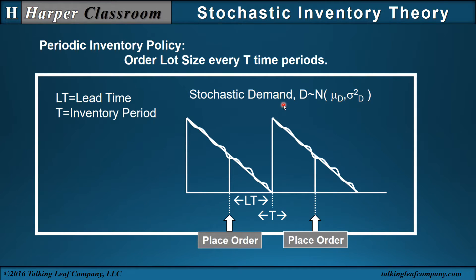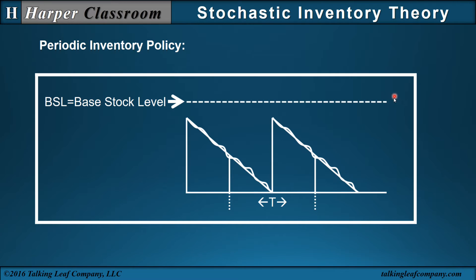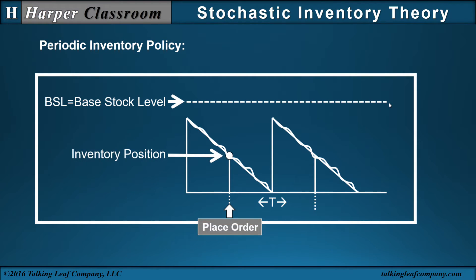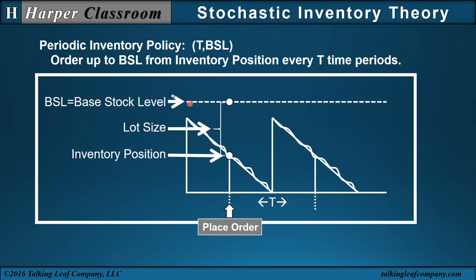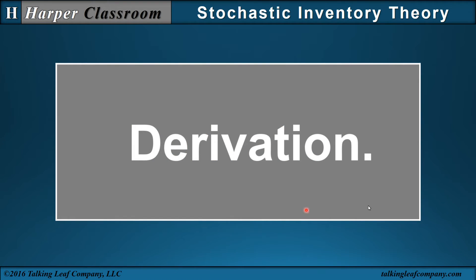When our demand is stochastic, then we consider something called a base stock level. At the base stock level, when you place your order, you will have an inventory position. That inventory position is compared with your base stock level, and the difference is going to be your lot size. Then your inventory policy will be order up to the base stock level from your inventory position every t time periods. Now let's look at the derivation.